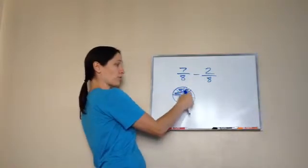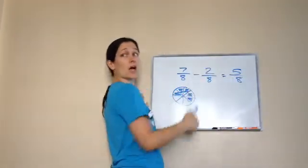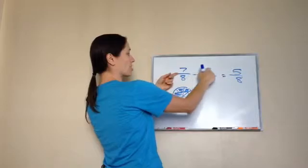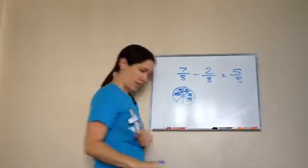One, two, and then we have one, two, three, four, five. Five eighths. So, that's the illustrated way, right? But the mathematical way is just to do the numerators. The top number, seven minus two, is five. Five, and you just slide that same number over. Yep. Got it?